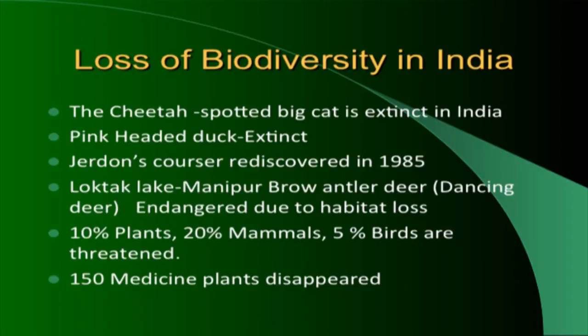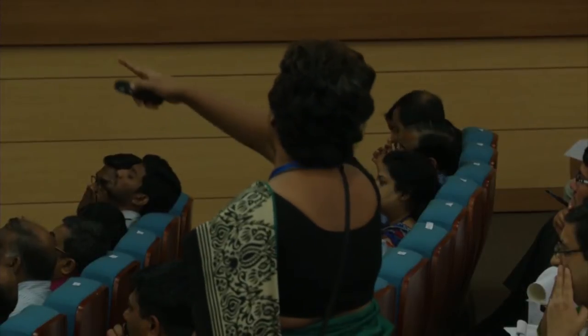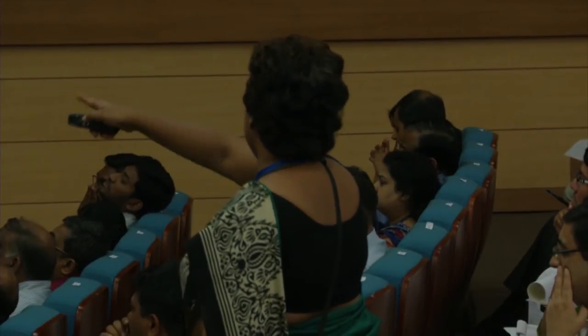In India, 10% of plants, 20% of mammals, and 5% of birds are already threatened with extinction. Unless we save their habitats, we could lose them. One hundred and fifty medicinal plants have already disappeared. Endangered Indian wildlife includes the white-backed vulture, lion-tailed macaque, saras crane, Siberian crane, lion, and tiger.